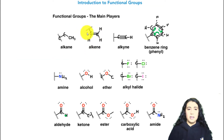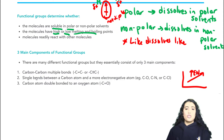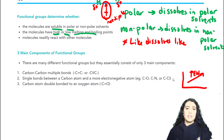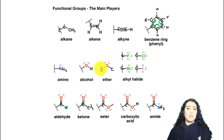Then there are functional groups with a single bond between a carbon atom and a more electronegative atom — a carbon bound to an oxygen in a single bond, a carbon bound to a nitrogen in a single bond, and a carbon bound to something like a chlorine or a halogen in a single bond. An amine is an example of carbon bound to nitrogen.